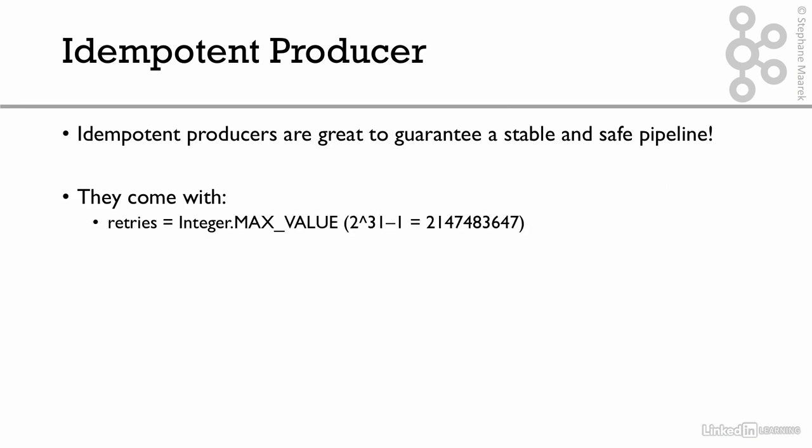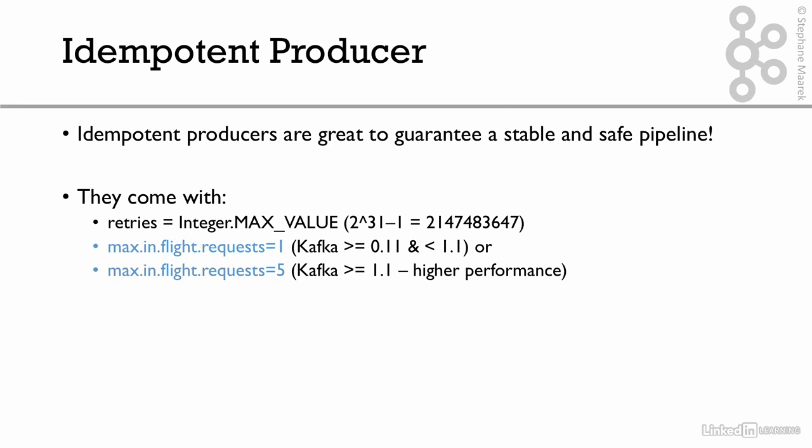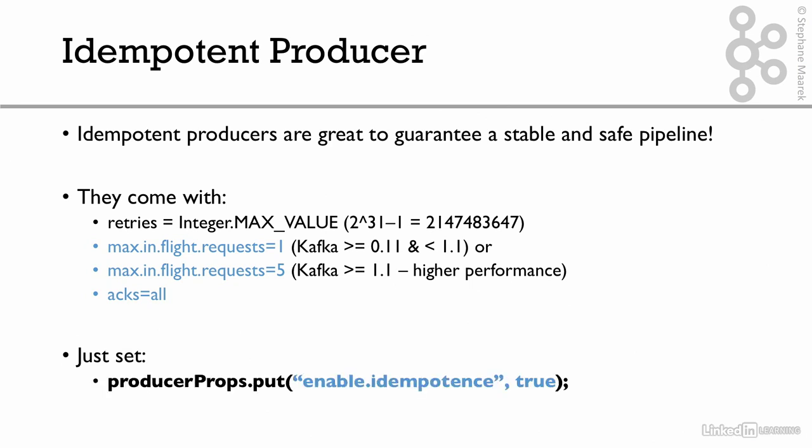What does an idempotent producer come with? It comes with retries set to Integer.MAX_VALUE, which is a very high number, meaning your producer will basically retry indefinitely. It comes with max in-flight requests equal to 1 if you use Kafka 0.11 or less than 1.1, or max in-flight requests equal to 5 if Kafka is greater than 1.1. Remember, with max in-flight requests equal to 5 you may get out-of-order batches — but not anymore with 1.1, since you can get high performance and still keep safety with max in-flight requests equal to 5. The idempotent producer also comes with acks equal to all, so you ensure you don't lose data. To enable all of this, just set: props.put("enable.idempotence", true). That's it.